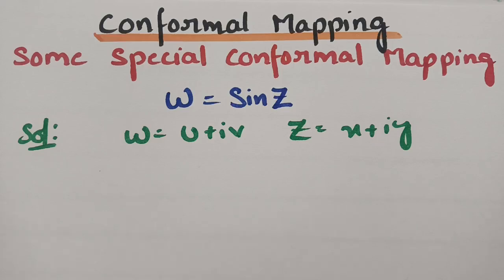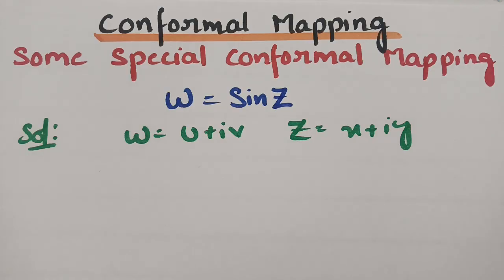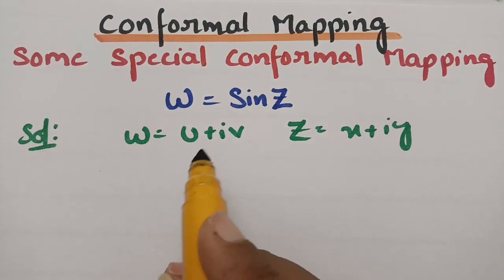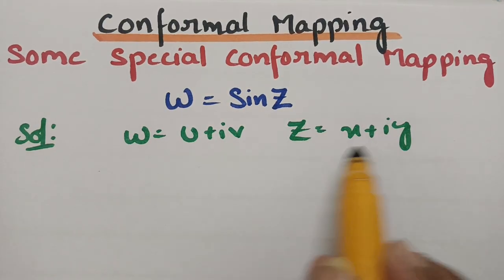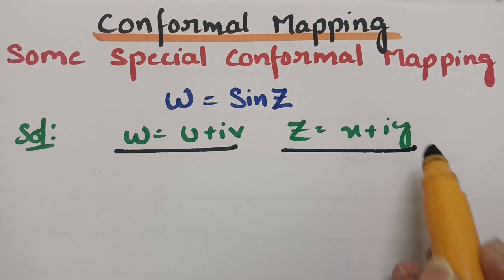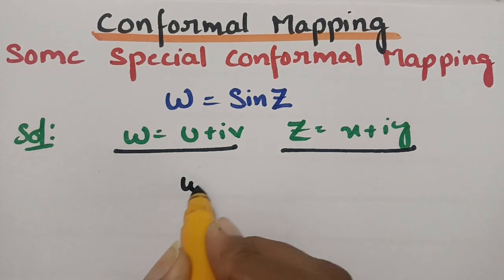Hope you're all having a fantastic day. I'm going to share the most important and repeatedly asked mapping from conformal transmission. I'll make this mapping easier for you, and you can solve it on your own if you concentrate for a few minutes. This mapping is nothing but w = sin(z). As everybody knows, w = u + iv and z = x + iy, so we have to substitute in w = sin(z).